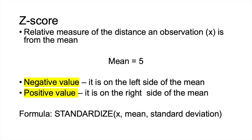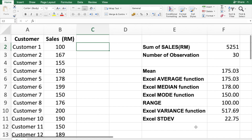We can calculate the z-score using Microsoft Excel. The formula we use is STANDARDIZE. If we key in the formula in the Excel sheet, we should be able to calculate the z-score. I'll now show you how to do this using data from our previous tutorial.